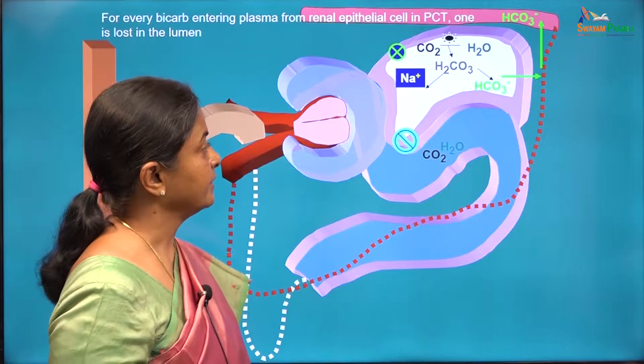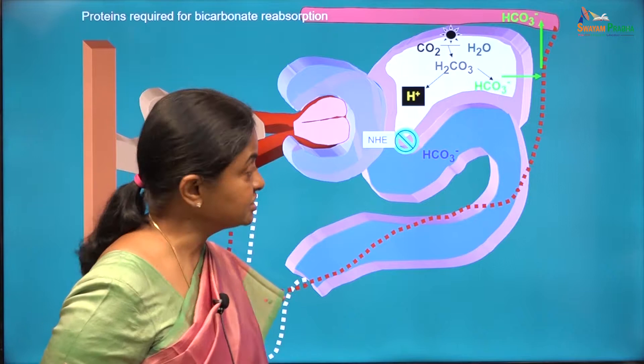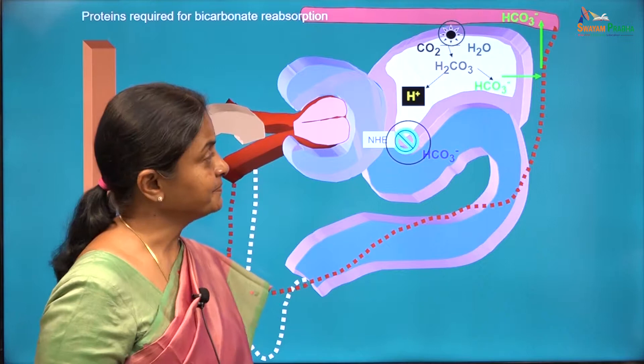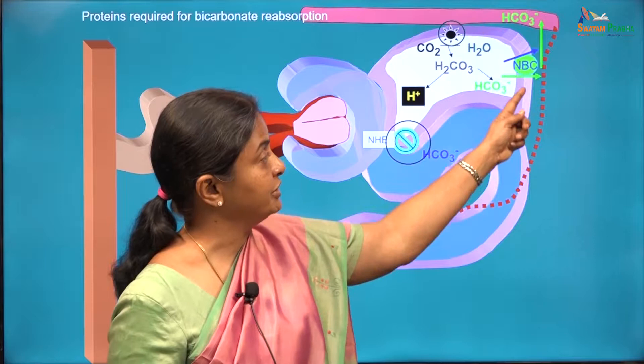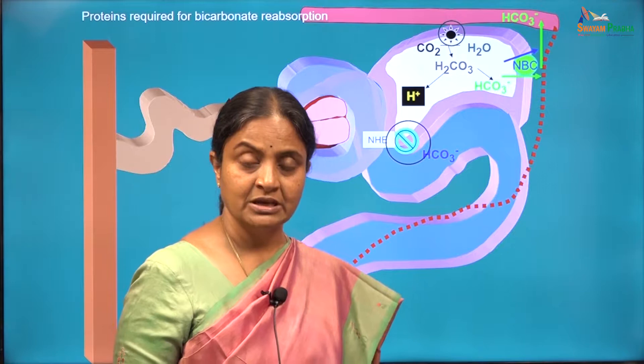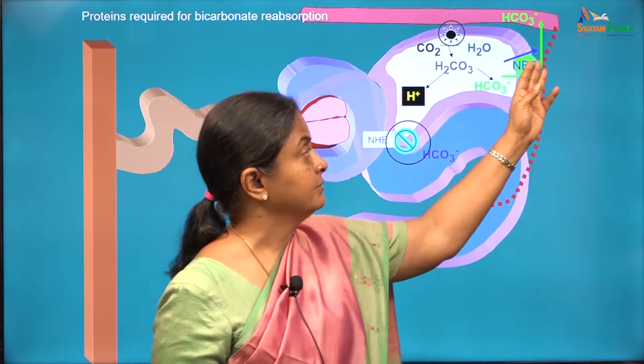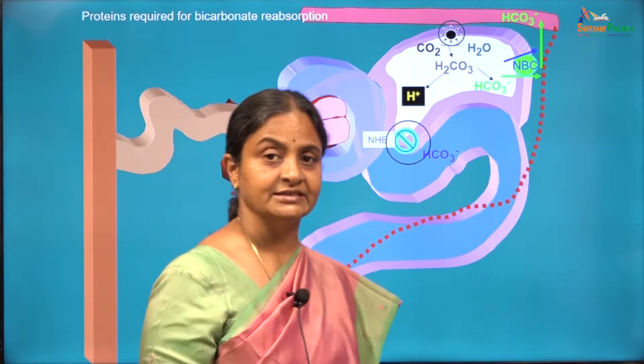The proteins important for this process are the carbonic anhydrase enzyme, the sodium-hydrogen exchanger, and the bicarbonate transporter in the basolateral border of the proximal tubular cell — the sodium bicarbonate co-transporter with a stoichiometry of 1 sodium to 3 bicarbonate. That is the transporter which extrudes bicarbonate from the cell and into the capillaries.